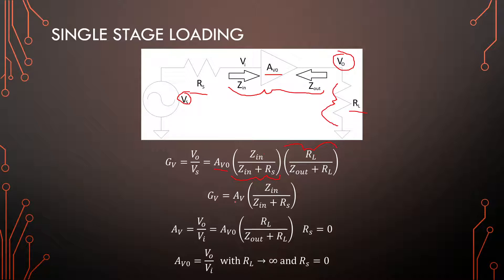Another way to rewrite this: GV equals AV times Zin over (Zin plus Rs), where AV is our loaded gain. Our loaded gain is Vout over Vin — so it's from the amplifier input towards Vout, without the source resistor being considered. That is our maximum gain combined with just the voltage division on the output side, which is why AV appears as the front-end part of this total gain equation.